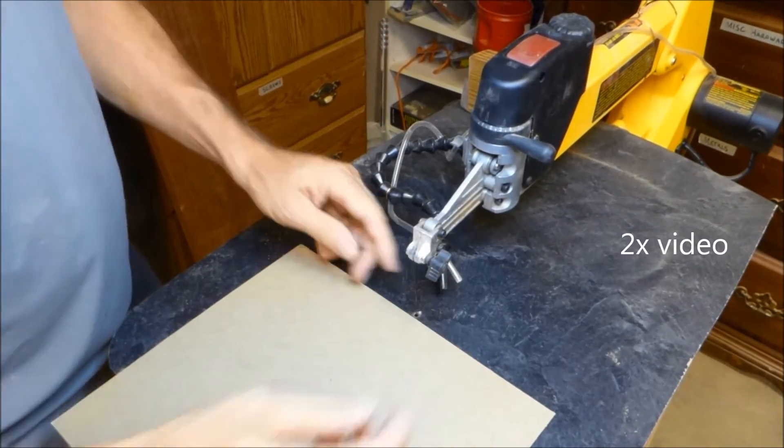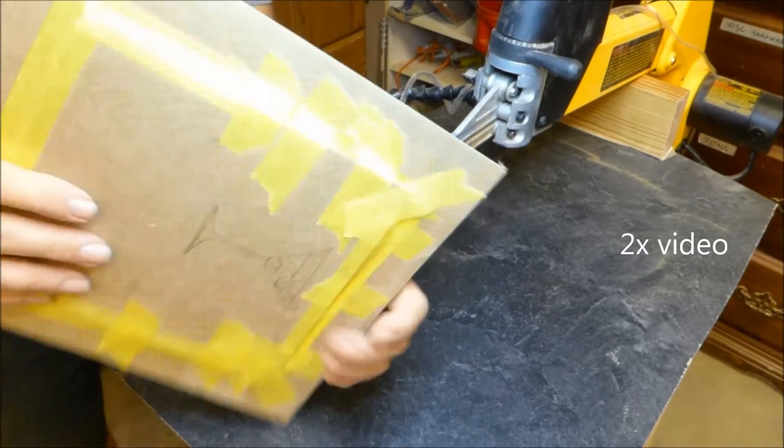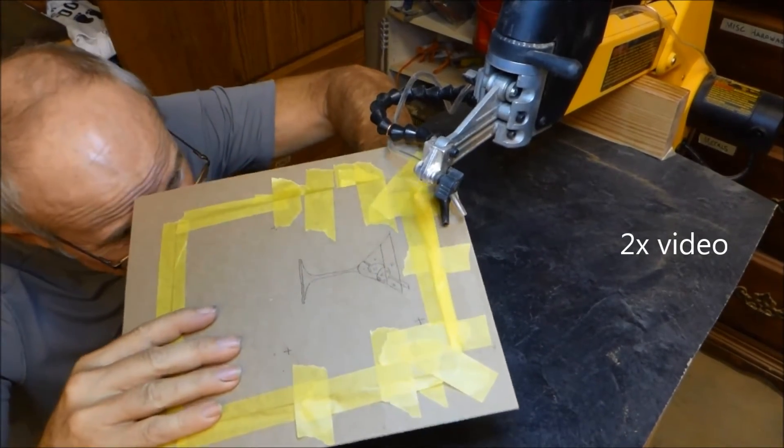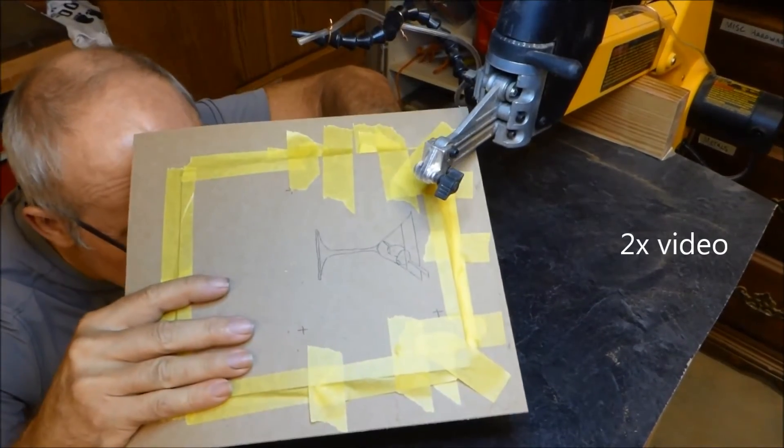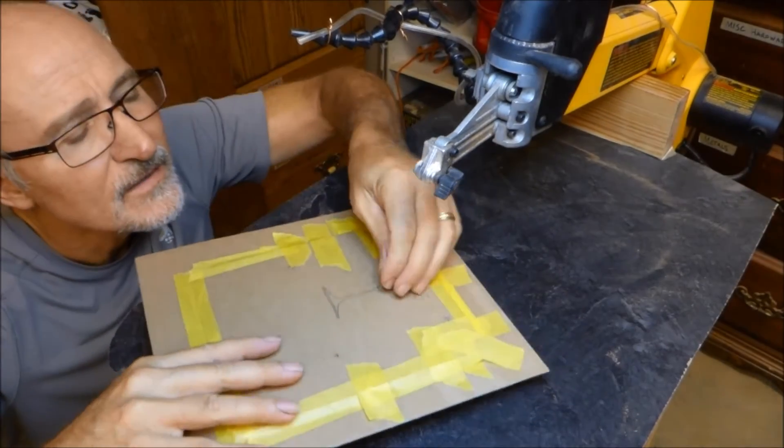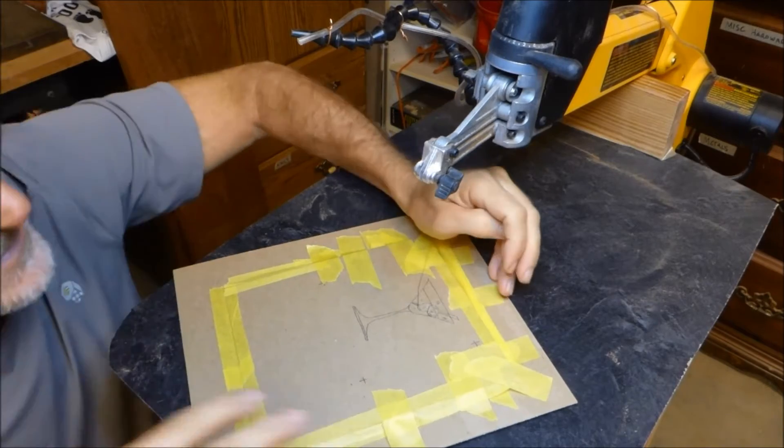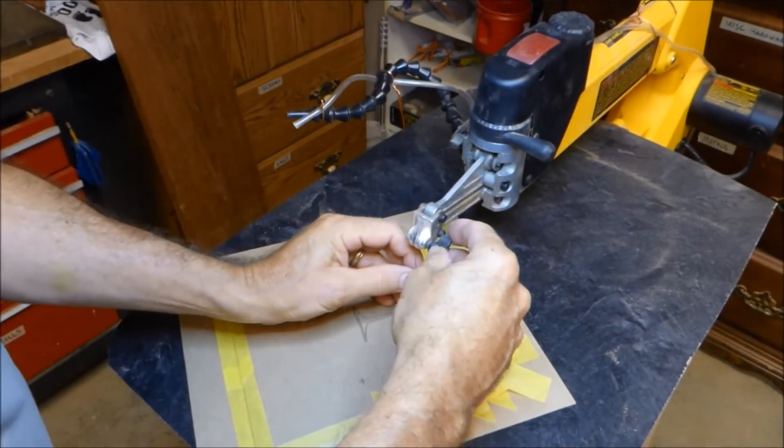Now we're going to feed the blade through that little hole we just created. If you've planned out your cutting well, you should really only have to do this once. Some designs, you may have to do it a little more, but generally you can get by with once. It's not too hard. Feed it through. It helps to have a light on one side to shine it through so you can see the hole. But you can see I've got it through there already. We just put it on the saw and tighten her up.